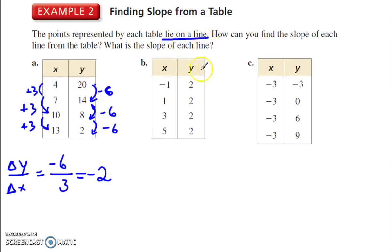Since they told us it's a line, I'm not going to have to check the rest of these. Now this here, the change is 0. The change here is 2. So change in y goes on top, 0 over 2. 0 divided by 2 is 0.